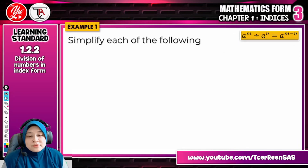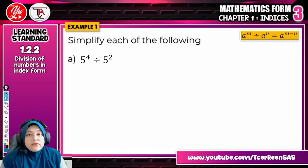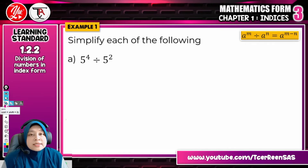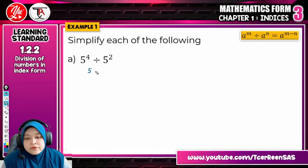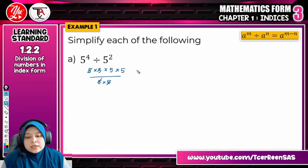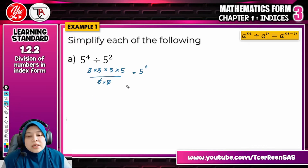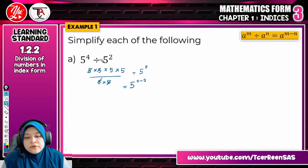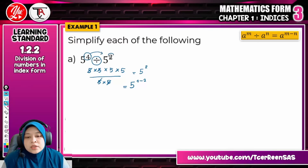Let us look at some examples. Simplify each of the following. 5 to the power of 4, divide by 5 to the power of 2. To answer this, you expand it as 5 times 5 times 5 times 5, divided by 5 times 5. If we simplify, we just leave it as 5 to the power of 2. By using the Law of Indices, we can make it faster — we take 5 and then 4 minus 2. If the operation is division, you just take the indices and minus the other indices. So 4 minus 2 equals 2, giving 5 to the power of 2.